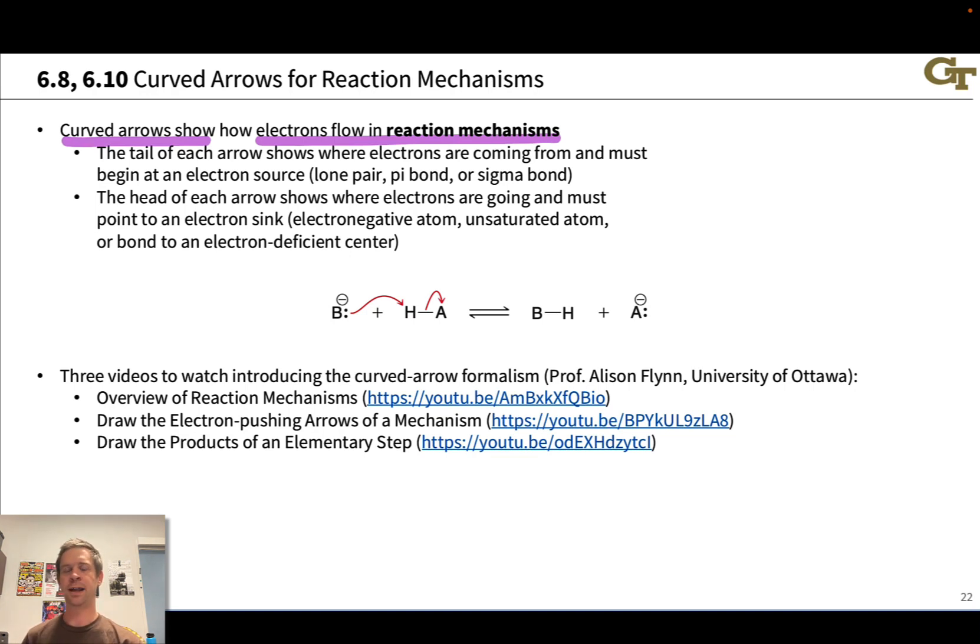We've previously encountered curved arrows in the context of inter-converting between resonance forms. And there, using curved arrows was mainly a bookkeeping device to show us how resonance structures were related and to help us make sure that we didn't lose electron pairs in inter-converting between resonance forms. And their meaning there was entirely on paper, entirely artificial.